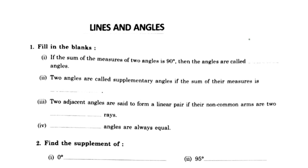First, fill in the blanks. If the sum of the measures of two angles is 90 degrees, then the angles are called complementary angles.